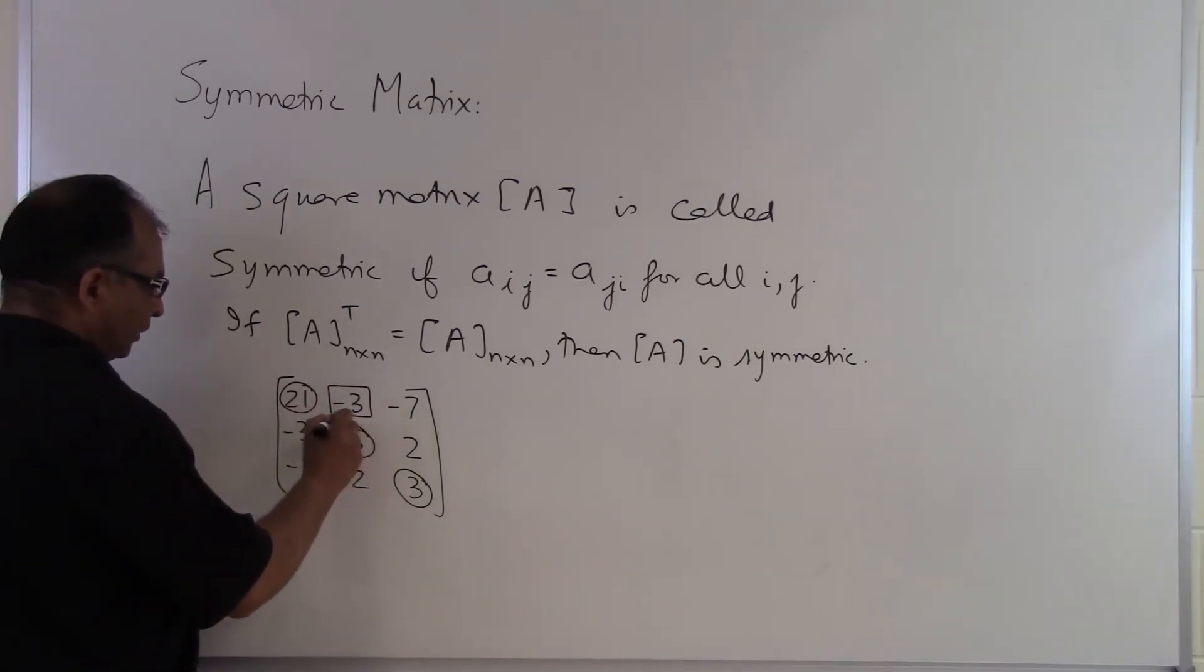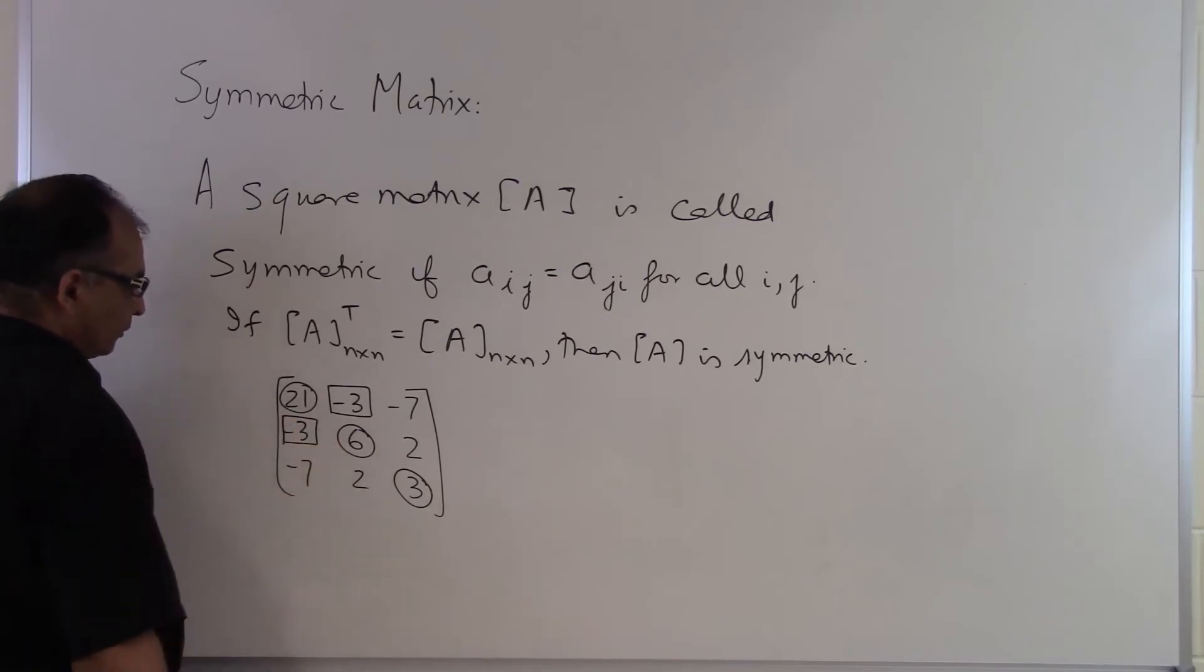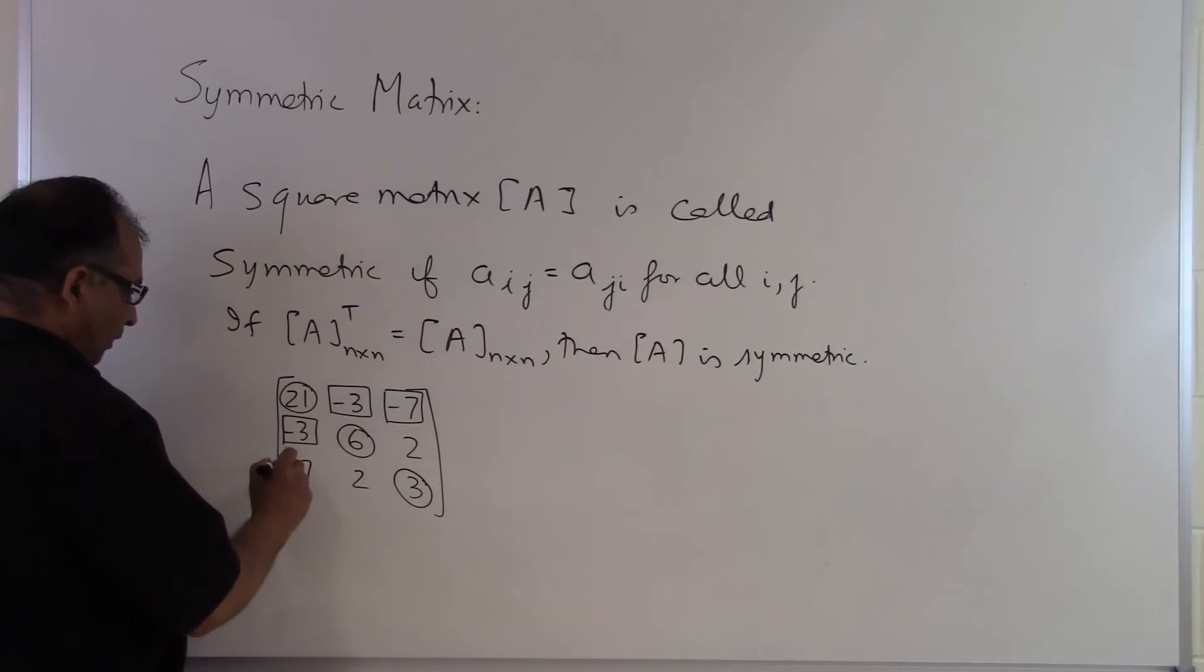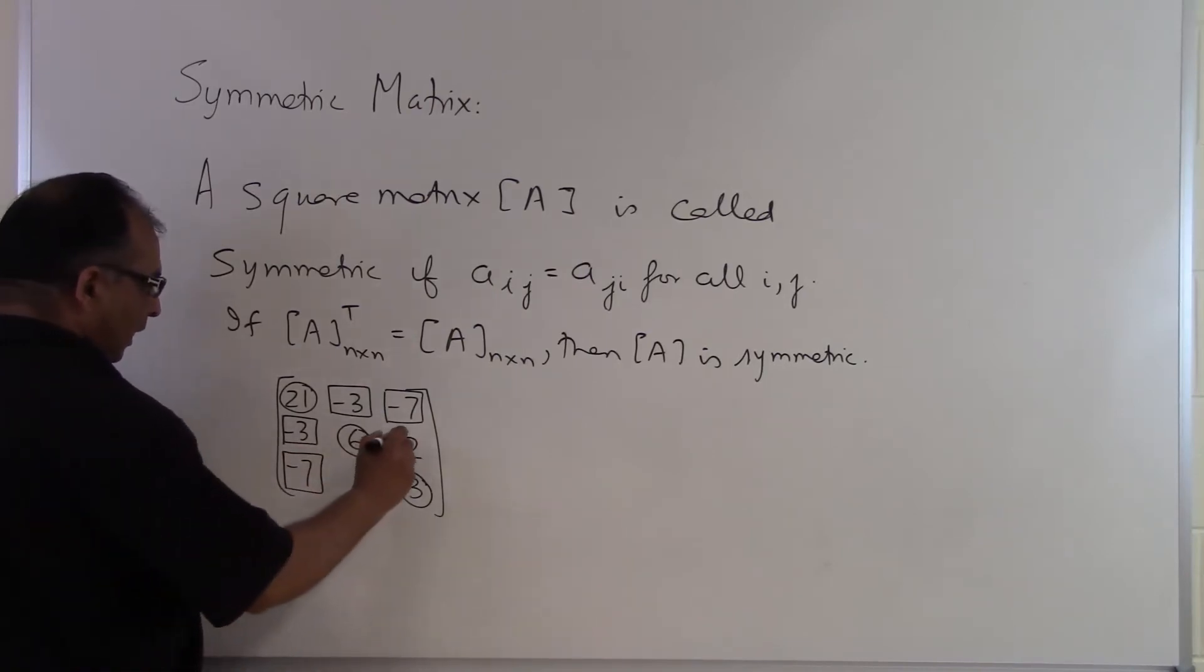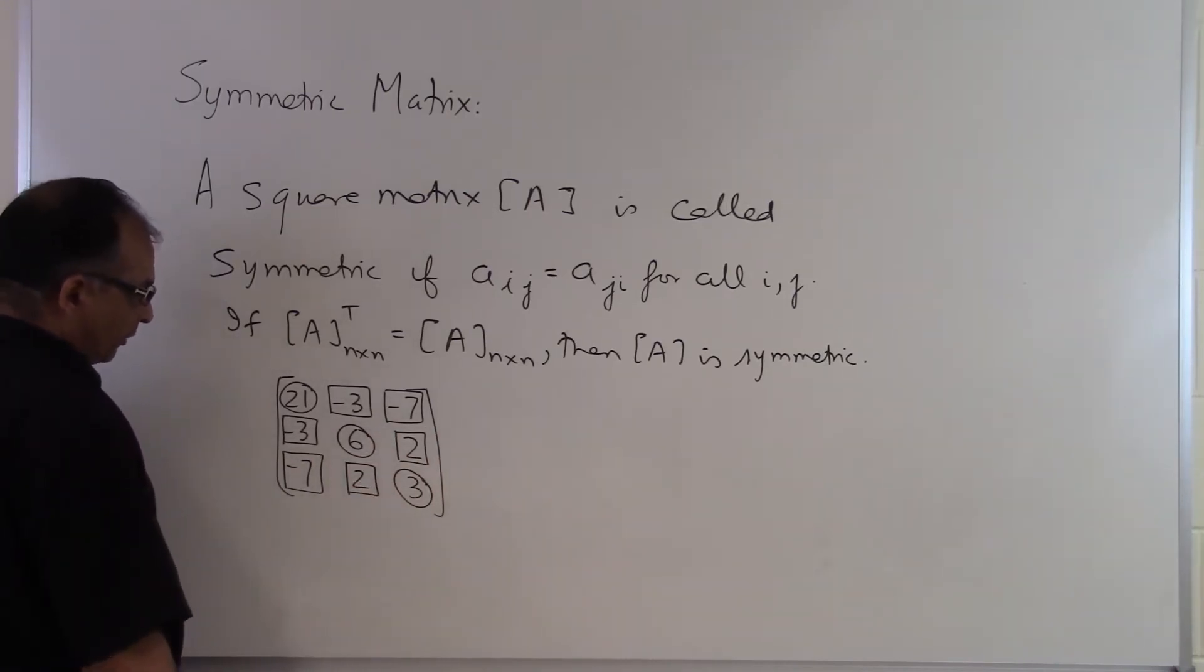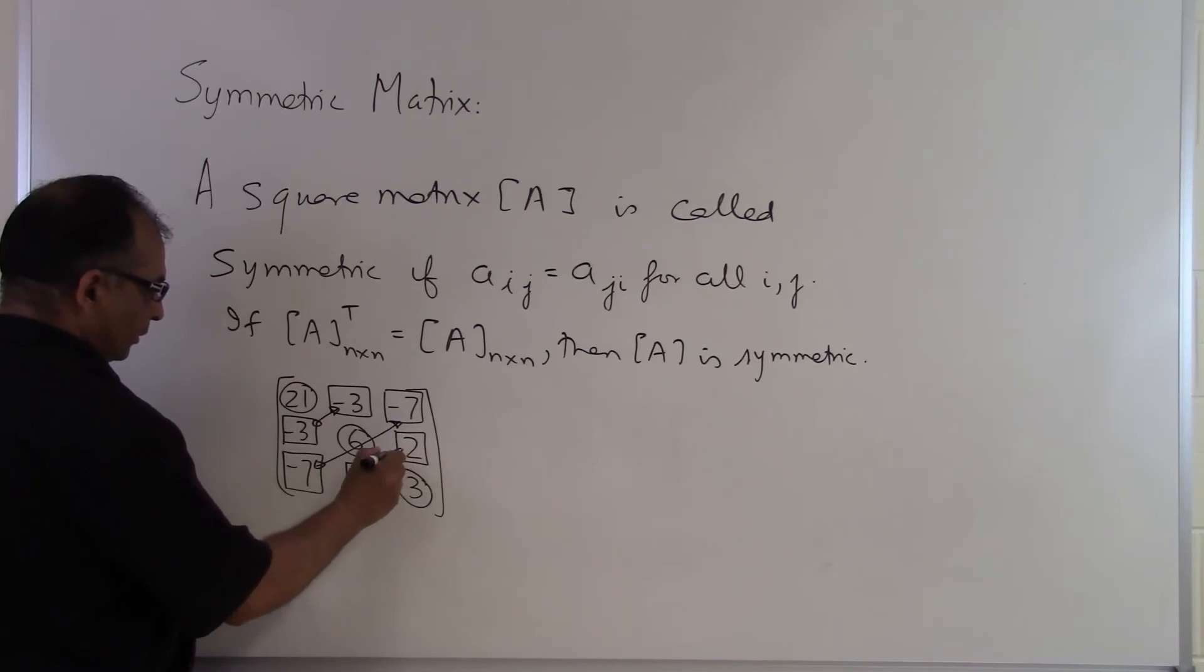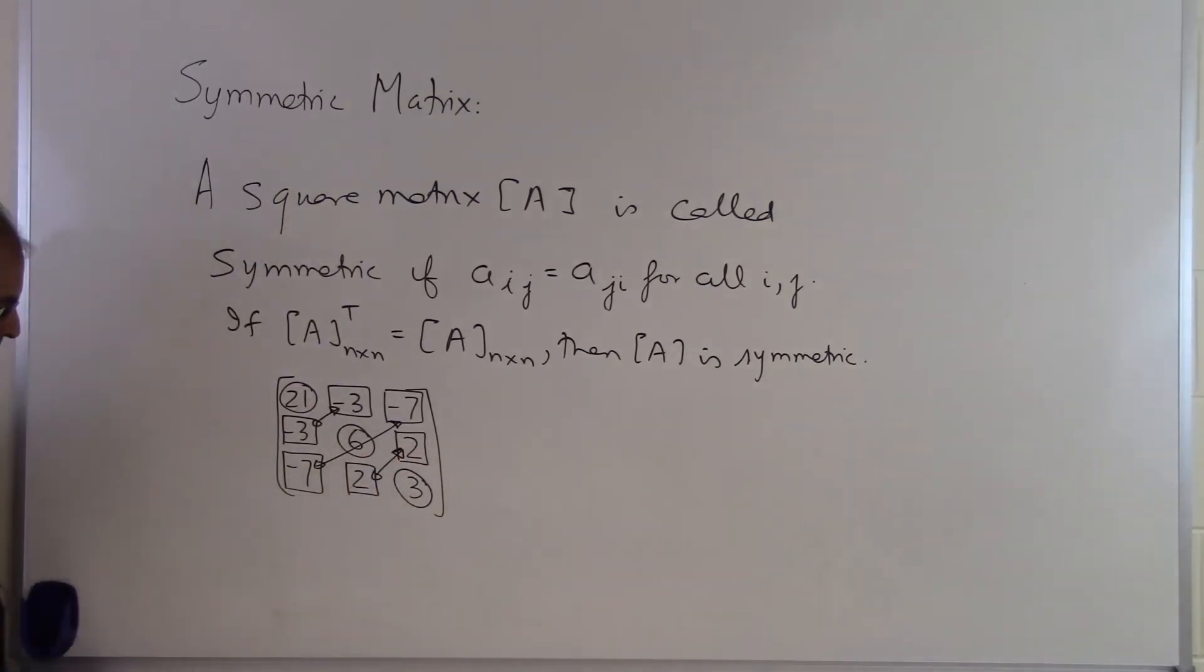If I look at this element right here, this is first row second column, this is second row first column, that's the same. This is first row third column, this is third row first column, they are the same. And then I have second row third column and I have third row second column, they are also the same. So this one is the same as this one, this one is same as this, and this one is same as this, and that's what makes this symmetric.